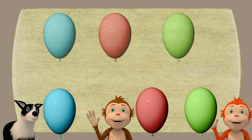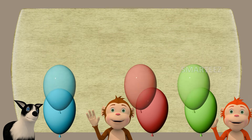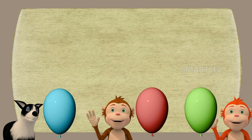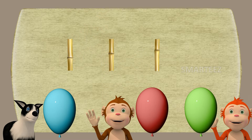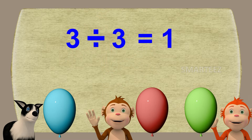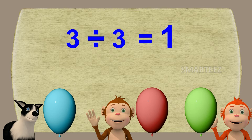I split three balloons among the three of you and you got one balloon each. We call this division. Dividing is a process of splitting a number into one or more equal parts. Here we can say three divided by three is one.